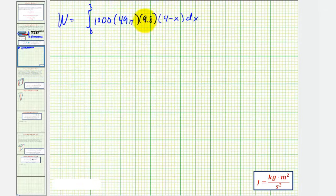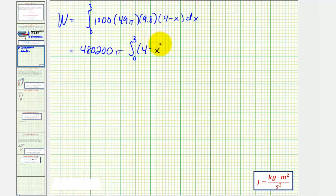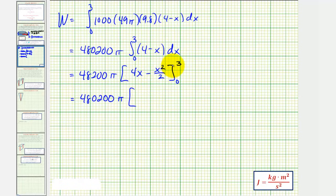Let's evaluate this. Notice how the product of these first three terms would just be a constant. Let's factor that out. 1,000 times 49 times 9.8 is 480,200. We'll factor out the pi as well. Now we'll find the antiderivative of 4 minus x. That would be 4x minus x squared divided by 2. Notice when x is 3, we would have 12 minus 9 halves. And when x is zero, these are both zero. Well 12 minus 9 halves would be 15 halves.